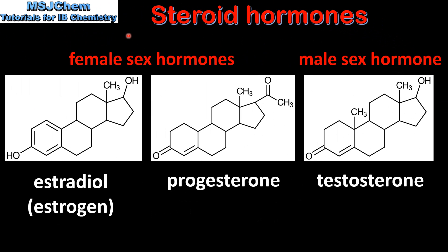Next we look at steroid hormones. Here we have the female sex hormones which are estradiol or estrogen, and progesterone. On the right we have the male sex hormone which is testosterone. As you can see, all the sex hormones have the 4 fused hydrocarbon ring structure which is the steroidal backbone.